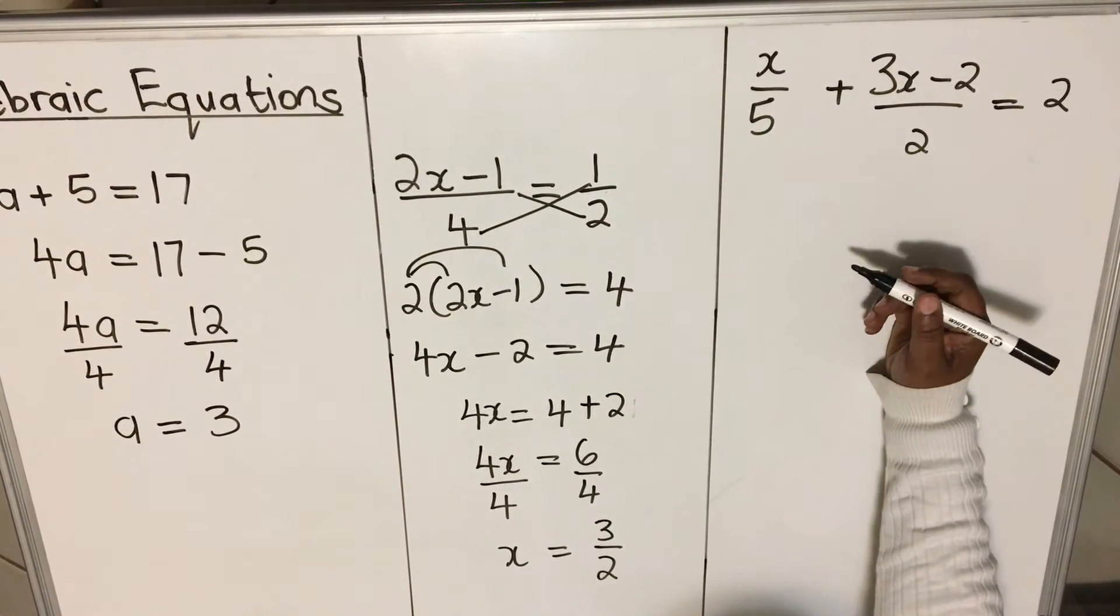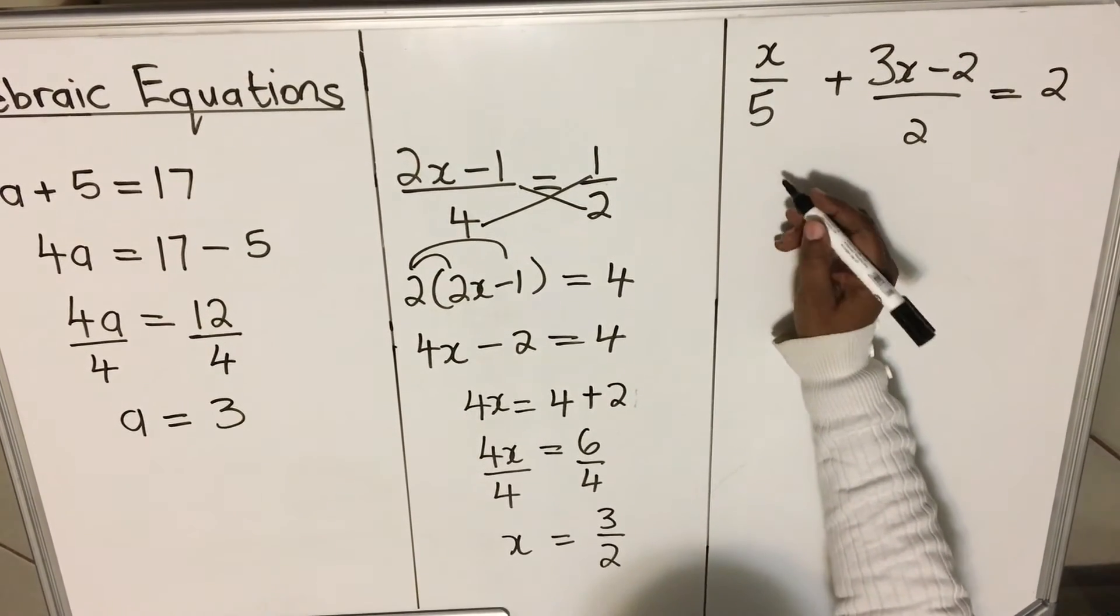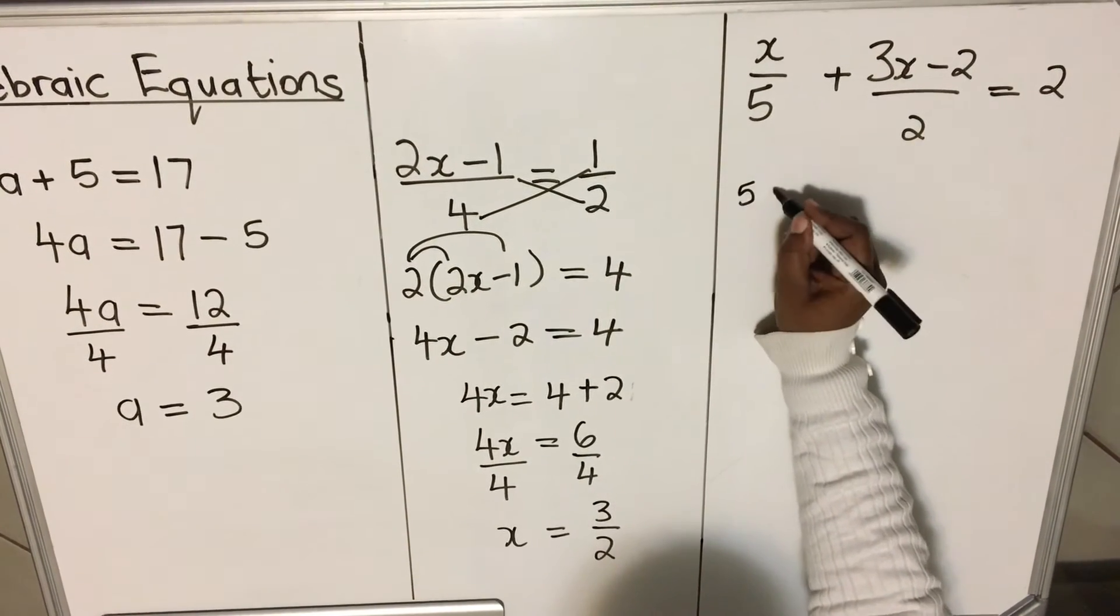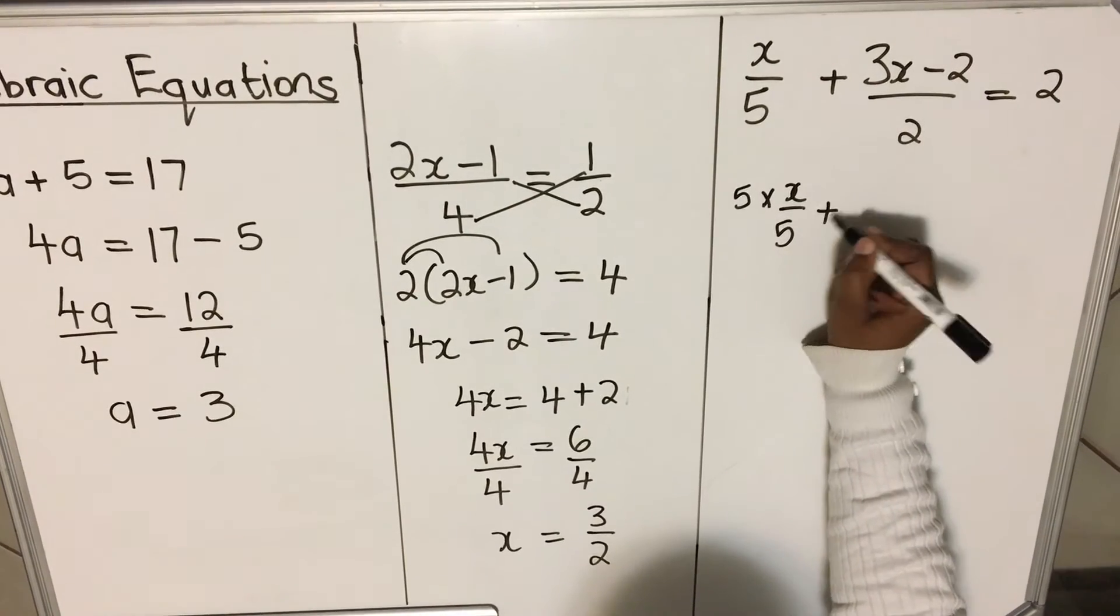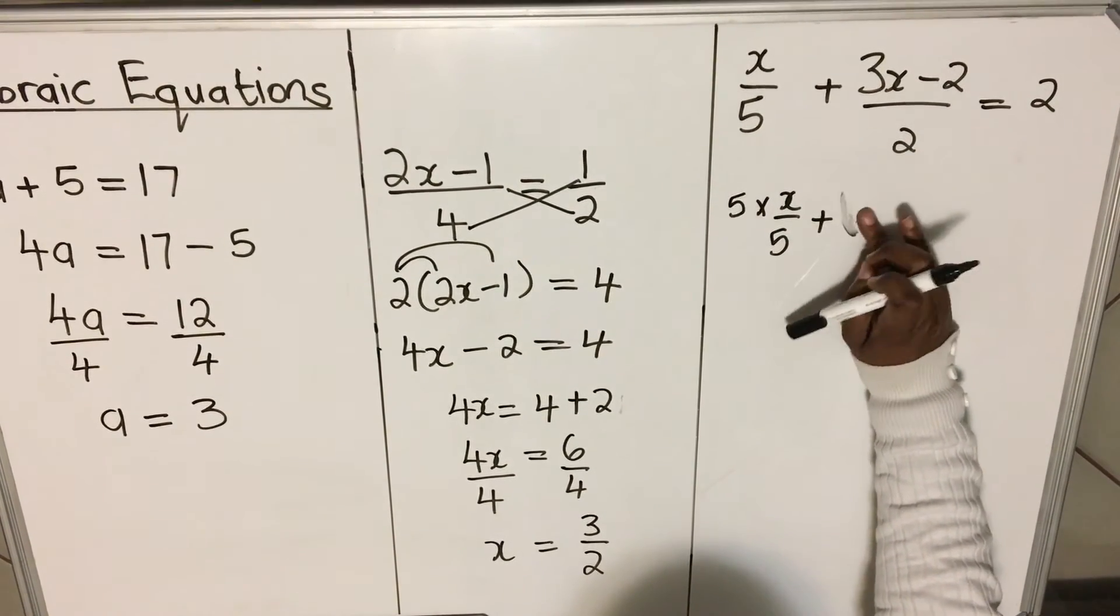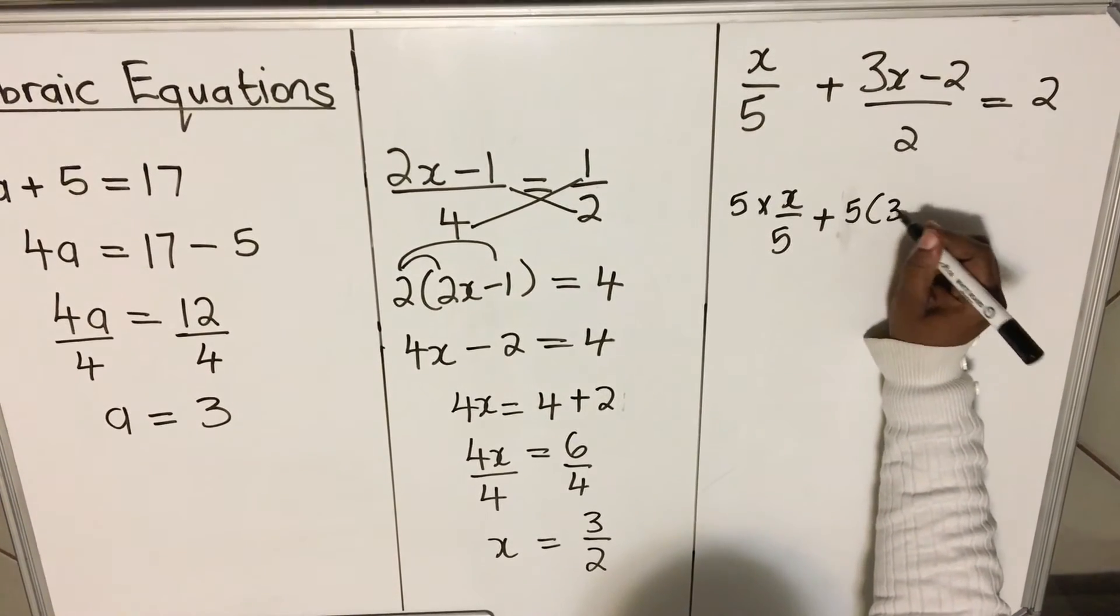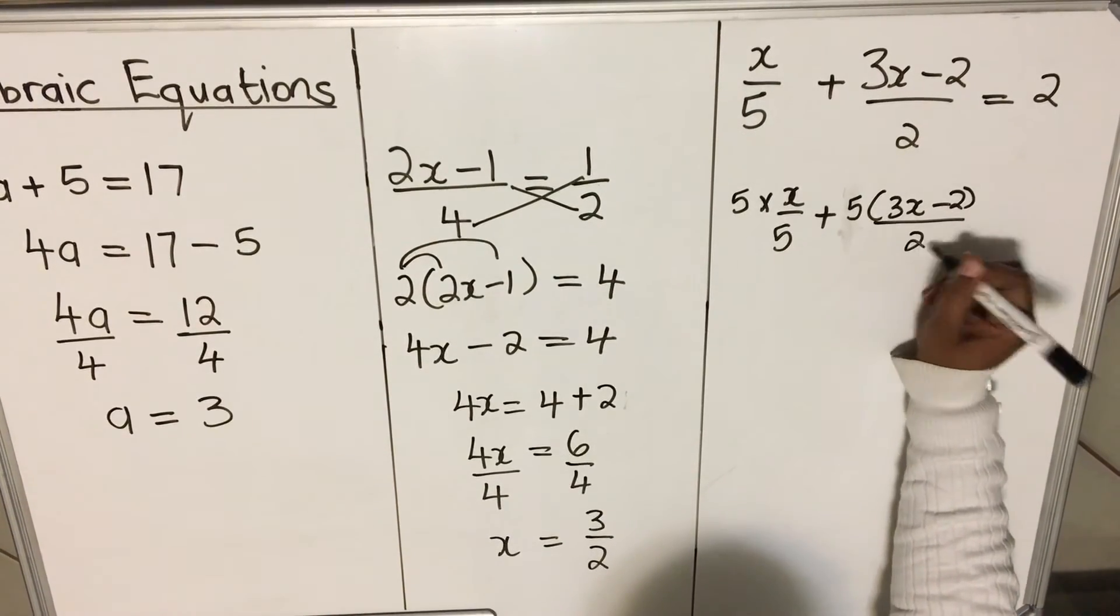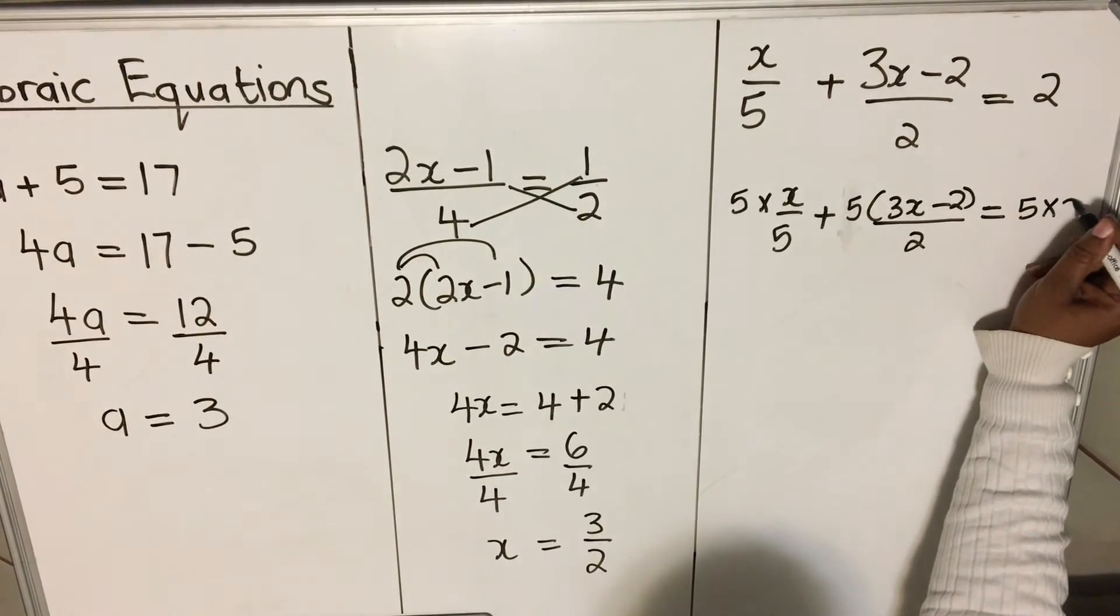So what you do, you multiply each term with the first denominator. My first denominator is 5. So we have 5 times x over 5, you multiply each term with a 5, 5 times 3x minus 2 over 2. And then it equals 5 times 2, 5 times 2.